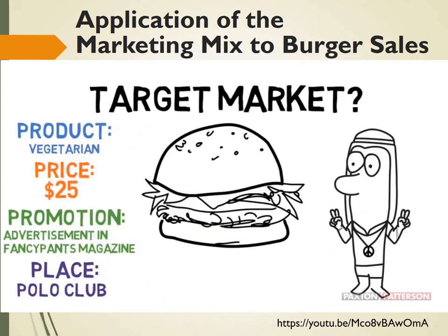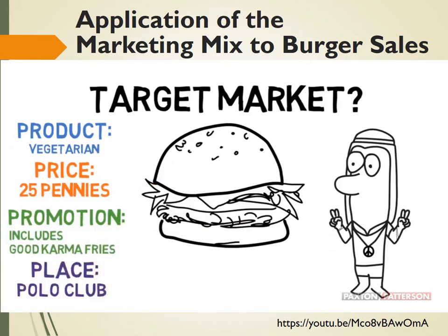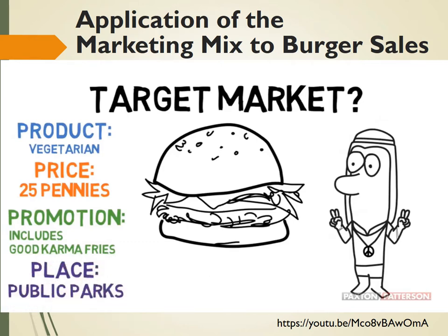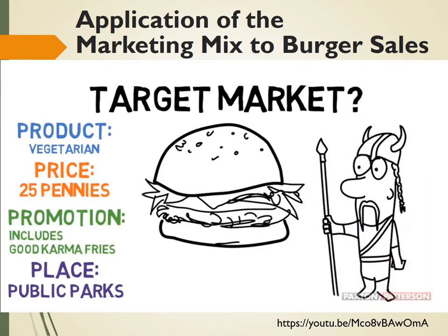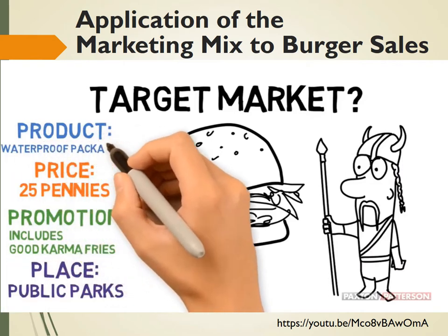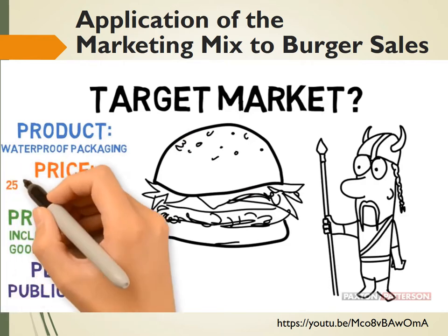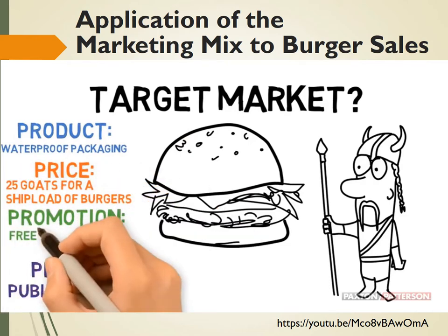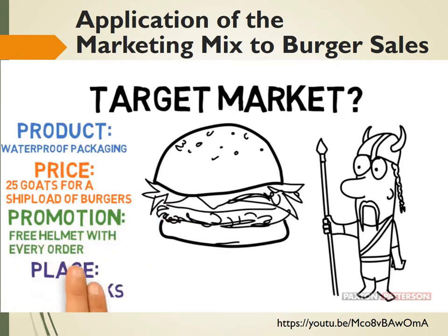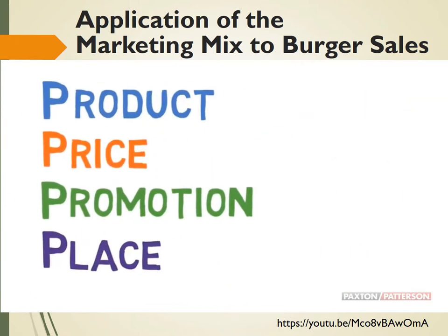Consider a vegetarian burger for a different target market. You won't be able to charge much — you may even have to loan him money. Including good karma fries will encourage him to spread the word, and selling them in a public park would be a good idea. For yet another target market — someone who spends a lot of time at sea — waterproof packaging would be a good idea. He doesn't have any cash but has plenty of goats on board, and you'll need to deliver. So there you have it: the 4Ps make up the marketing mix — product, price, promotion, and place.